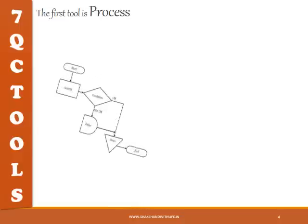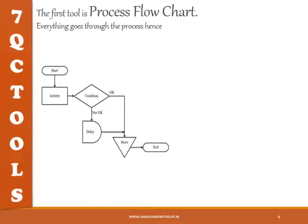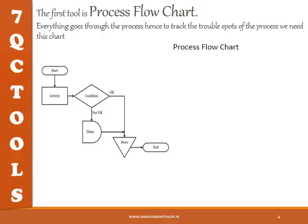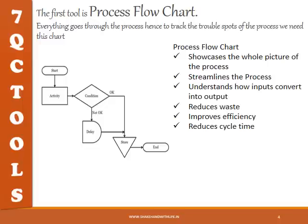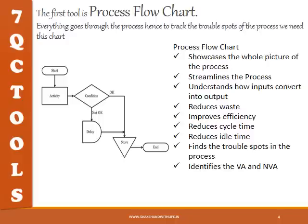The first tool is process flowchart. Everything goes through the process — this chart is used to track the trouble spots of the process. Process flowchart showcases the whole picture of the process, streamlines the process, understands how inputs convert into outputs, reduces waste, improves efficiency, reduces cycle time, reduces idle time, points out trouble spots, identifies value-added and non-value-added activities, and helps train newcomers.